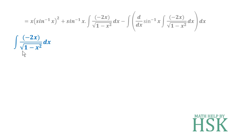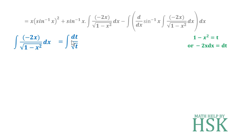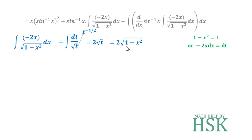To integrate −2x/√(1−x²) with respect to x, I substitute 1−x² = t. Differentiating both sides gives −2x dx = dt. Replacing −2x dx with dt and 1−x² with t, I get ∫dt/√t = ∫t^(−1/2) dt. Applying the power rule ∫xⁿ dx = xⁿ⁺¹/(n+1), I get t^(1/2)/(1/2) = 2√t. Substituting back t = 1−x², the result is 2√(1−x²).